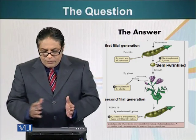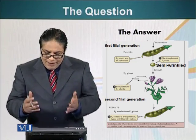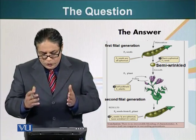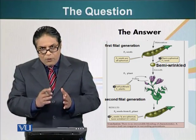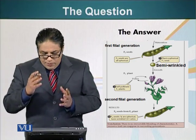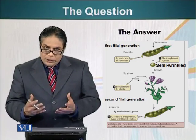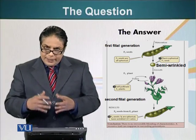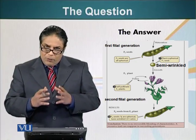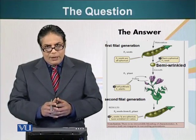Next, he crossed the F1 generation among themselves, and he got the F2, or second filial generation. He saw that in the F2 generation, three out of four seeds were spherical and one out of four seeds were wrinkled. How he used this data to interpret the results and make specific conclusions about the particulate theory, we will look at that in the following segment.